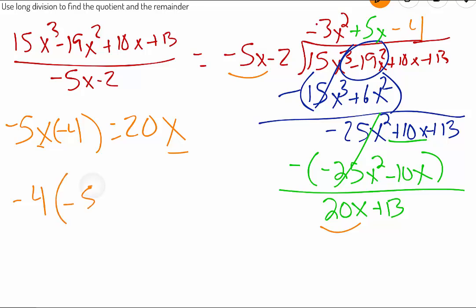And negative 4 times our divisor, well, that gives us 20x. We are going to subtract that 20x plus 8 and see what we get.